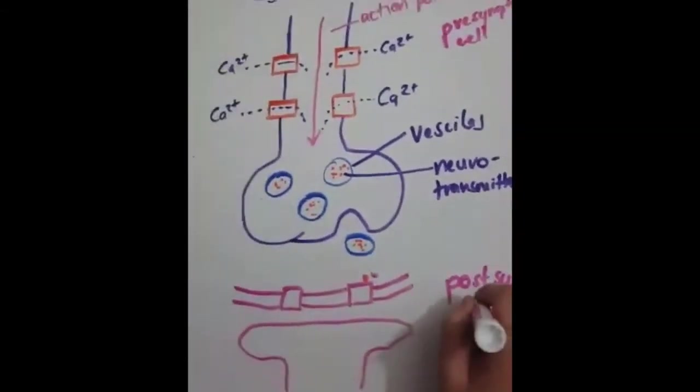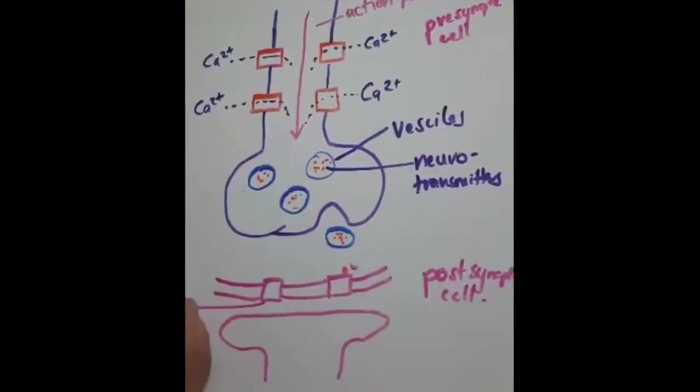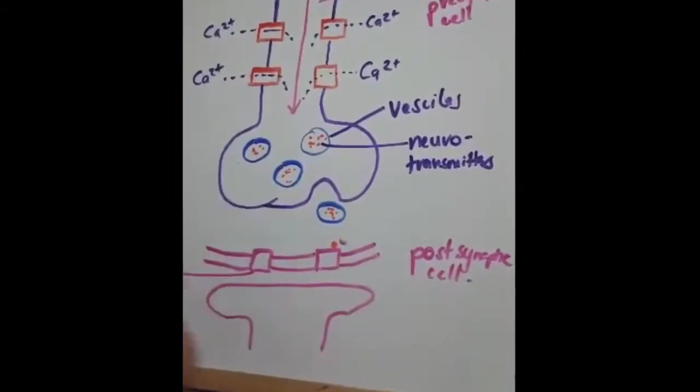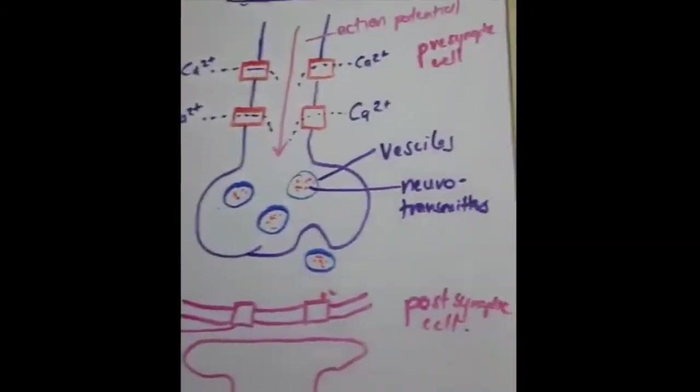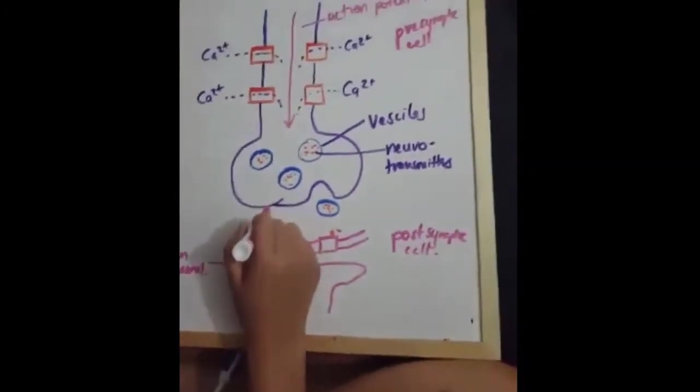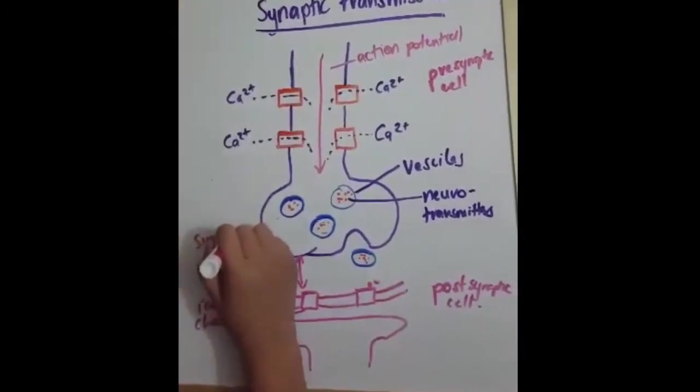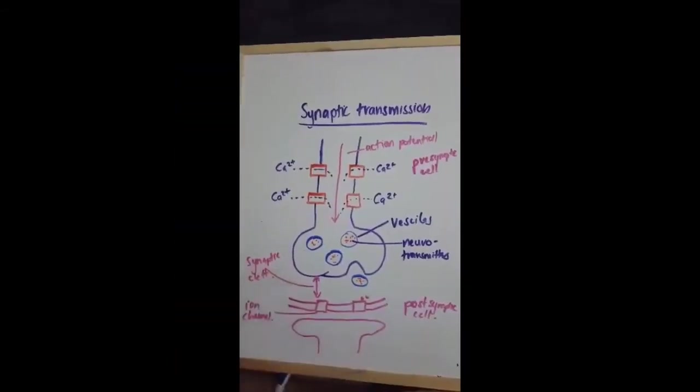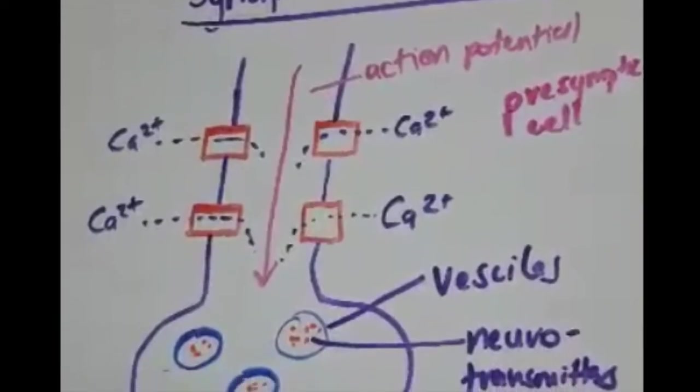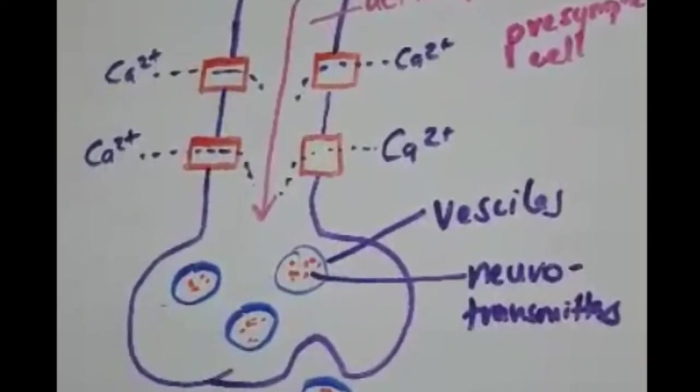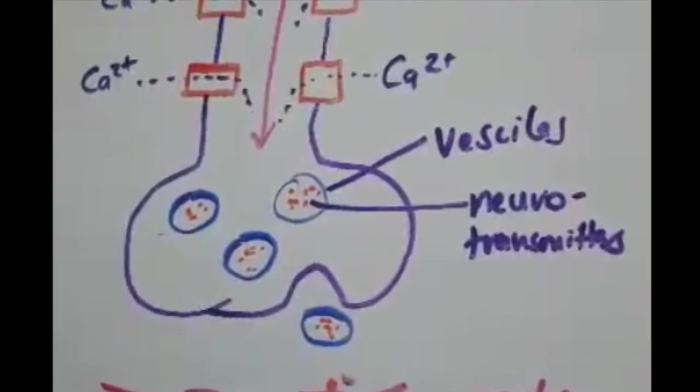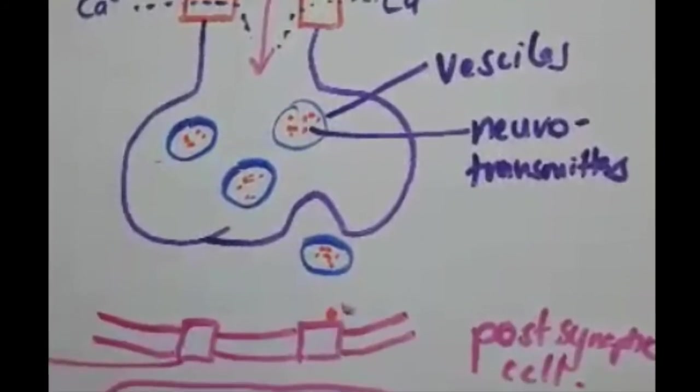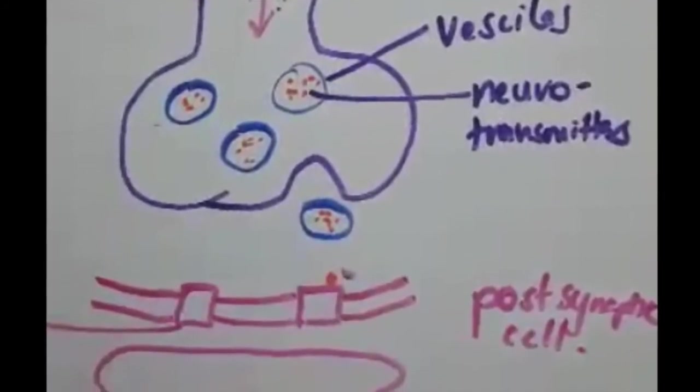Calcium-gated channels are activated by the termination of action potential. As a result, calcium enters the neuron. Calcium then activates the synaptic vesicles to fuse with the axon terminal membrane, triggering the presynaptic neuron to release chemicals known as neurotransmitters into the synaptic cleft. This process is known as exocytosis. The neurotransmitters will then bind onto the postsynaptic membrane.